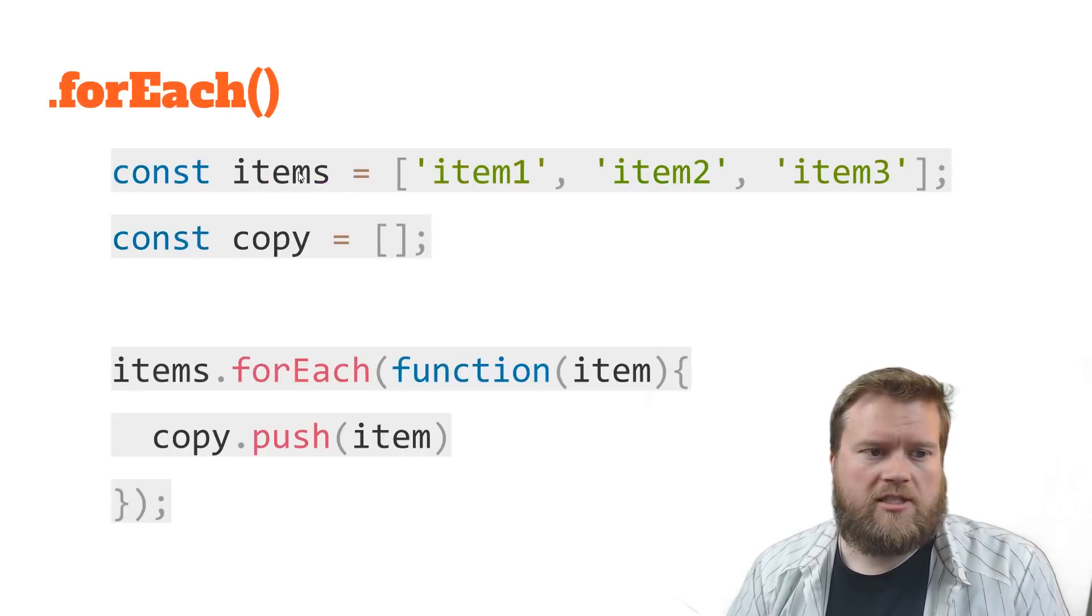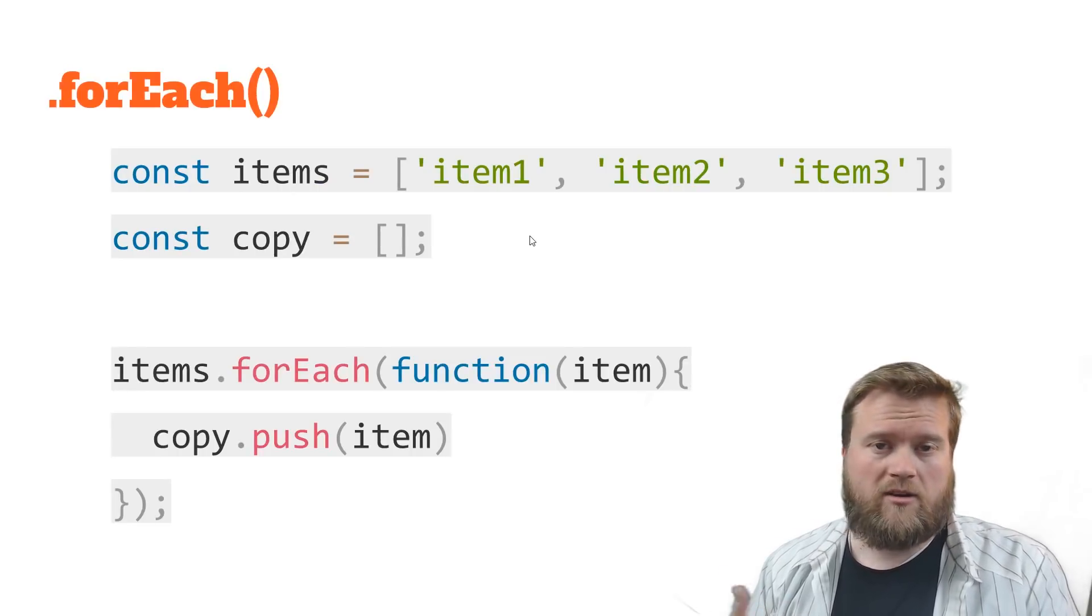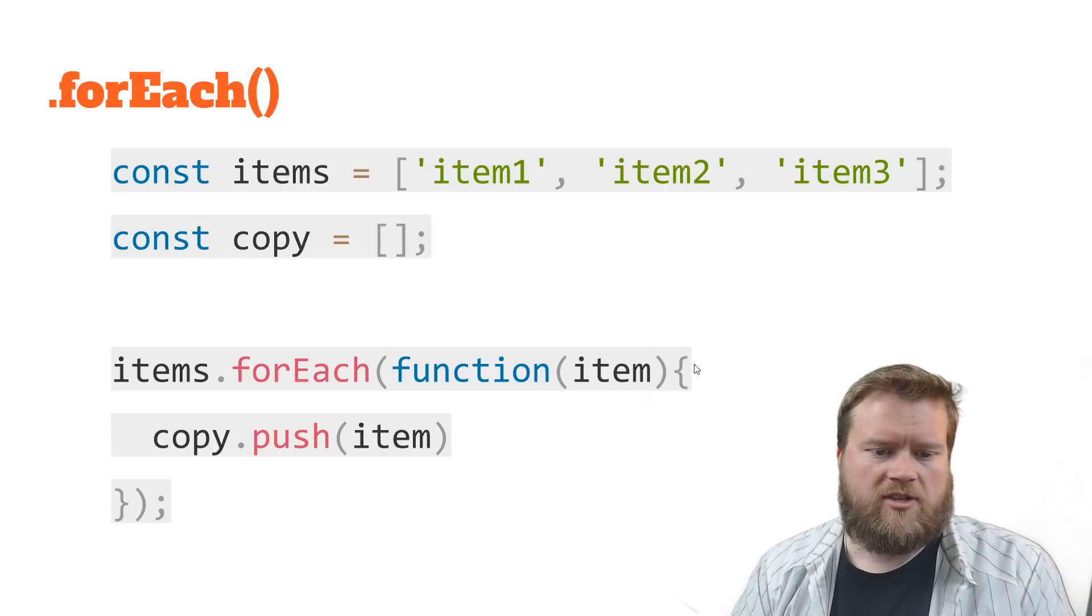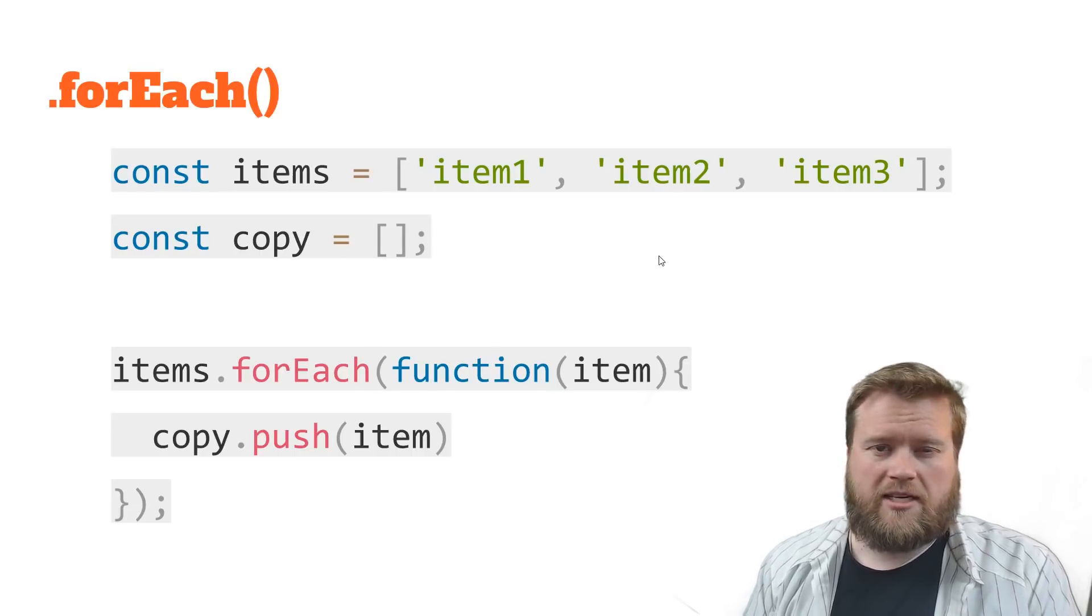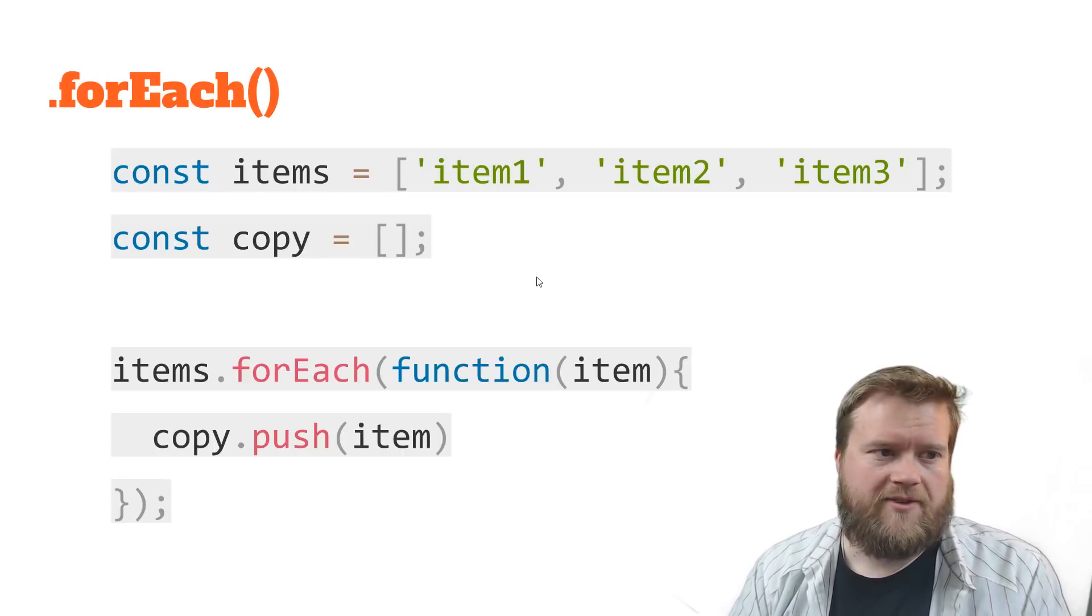ForEach. So forEach is sort of a better loop. It's just another way to loop through things. You can see here we have const items: item 1, item 2, item 3. Items for each function item. You can push it on there. So it just goes through each one of these. I don't think at this point you'll ever need to use like a for loop in JavaScript with things like this, because forEach will take care of it.